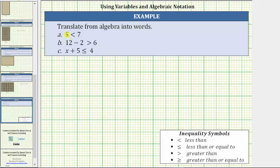So for A, we have five is less than seven. If we did read this from right to left, we would have seven is greater than five.